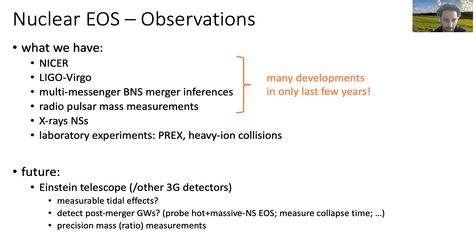GW170817 gives us really great constraints — it's a very high SNR, very close-by event, and we got super lucky. But even for GW170817, we can't actually formally distinguish between a binary neutron star and a binary black hole from the perspective of gravitational waves alone. We know it was a binary neutron star from the electromagnetic counterparts, but from gravitational waves alone there actually isn't any measurable tidal effect.